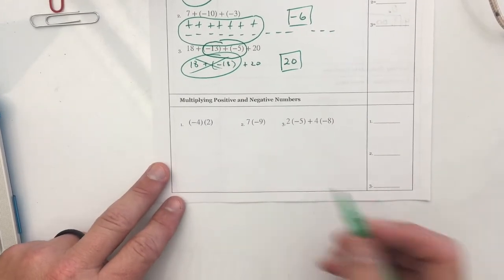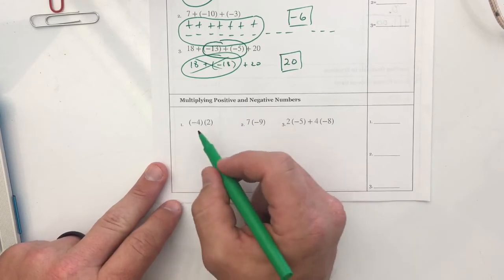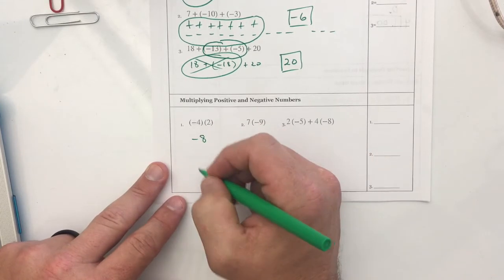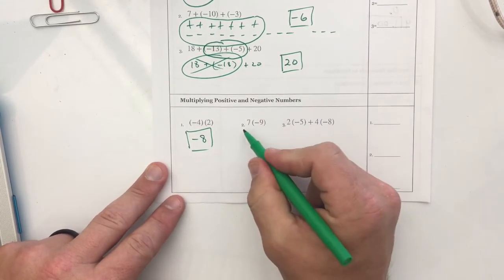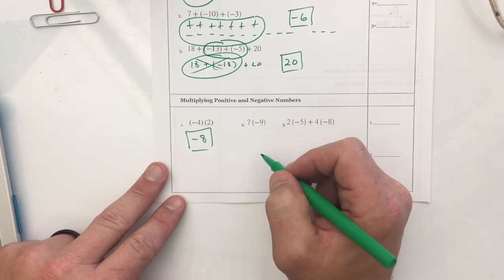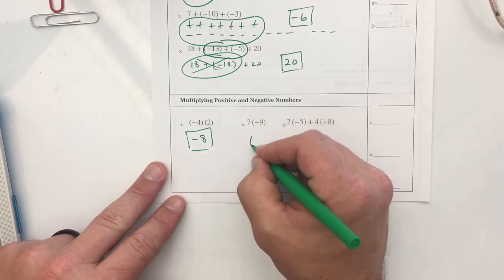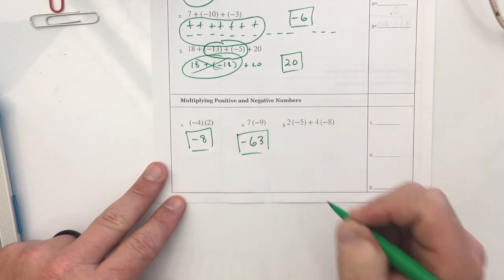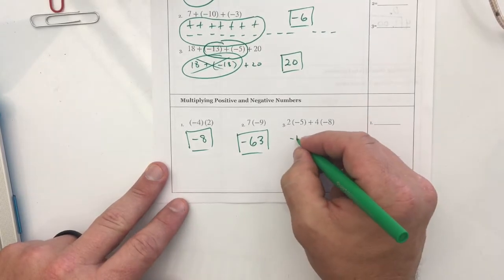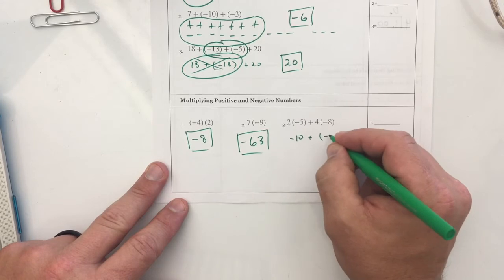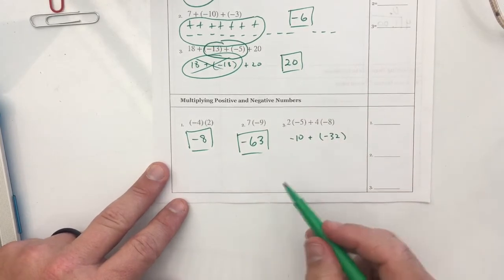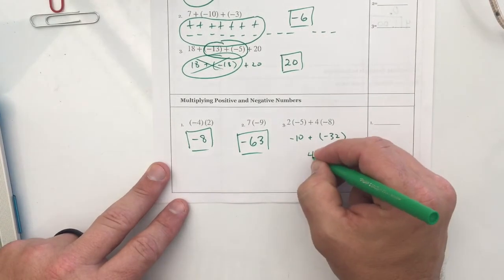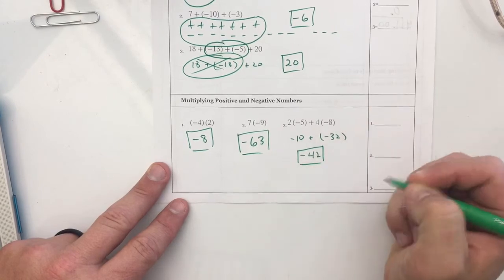Negative four times two. This is removing four groups of positive two. Or just think of it as four times two, which is eight. And if you have a negative times a positive, that's always going to be a negative. Negative eight. Seven groups of negative nine. That's a lot of negative nines. Seven times nine is sixty-three. A positive times a negative is always negative. Two groups of negative five is negative ten, plus four groups of negative eight is negative thirty-two. If I have ten negatives, and I add thirty-two more negatives, I have forty-two negatives. Wonderful.